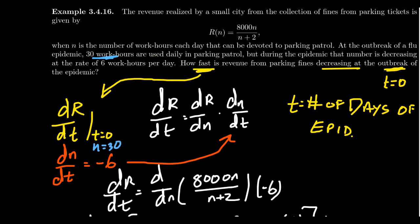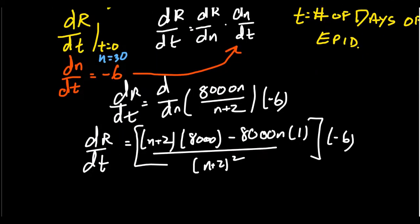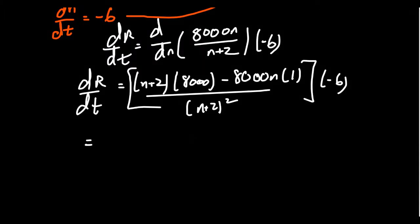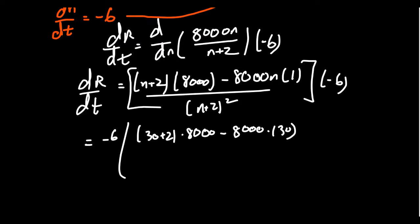We could plug 30 into this formula. Let's try that. We're going to get negative six times [(30 plus 2) times 8,000 minus 8,000 times 30] and this all sits above the (30 plus 2) quantity squared. To make it a little bit easier, I noticed the numerator has a common factor of 8,000, so let's factor it out.